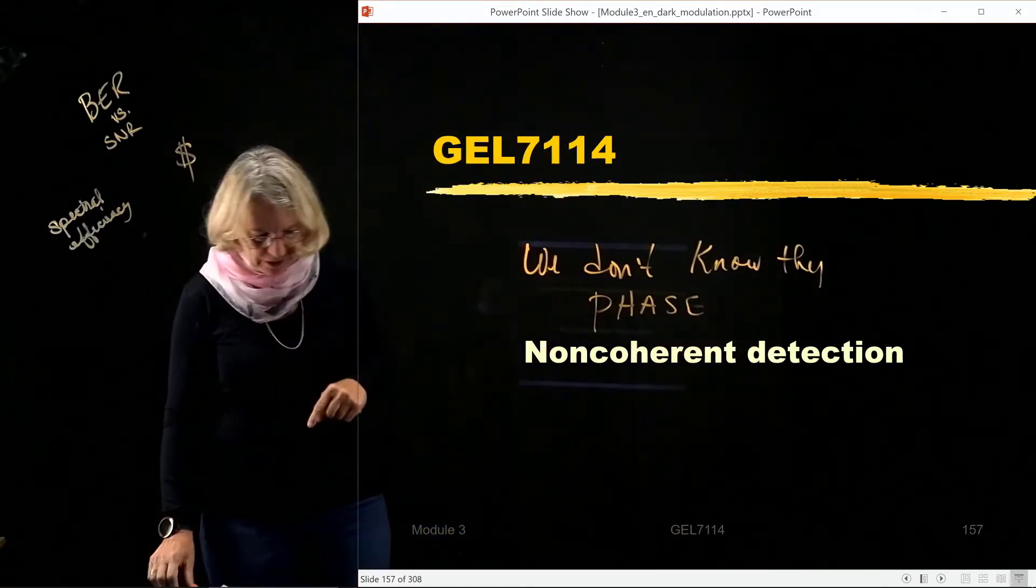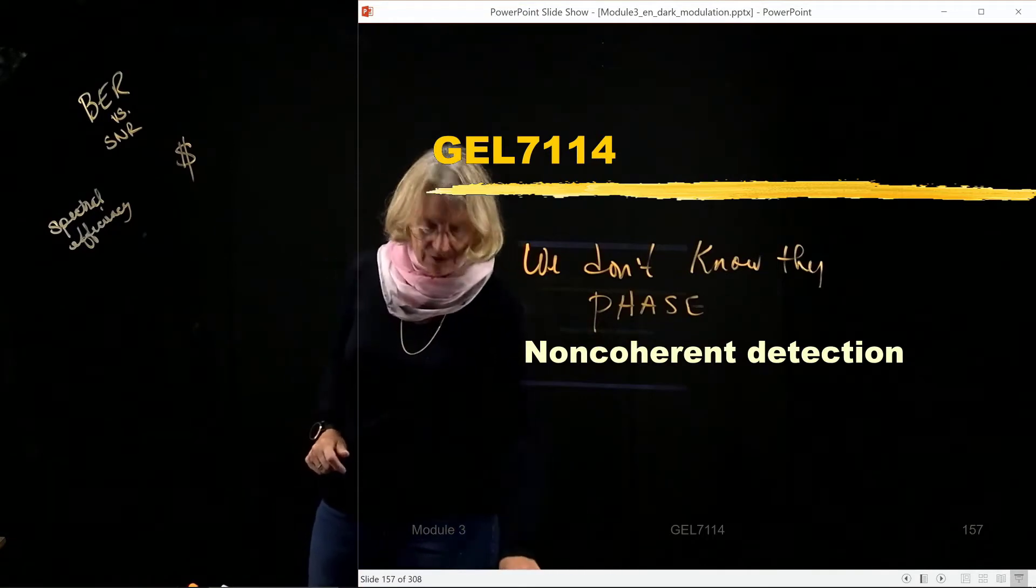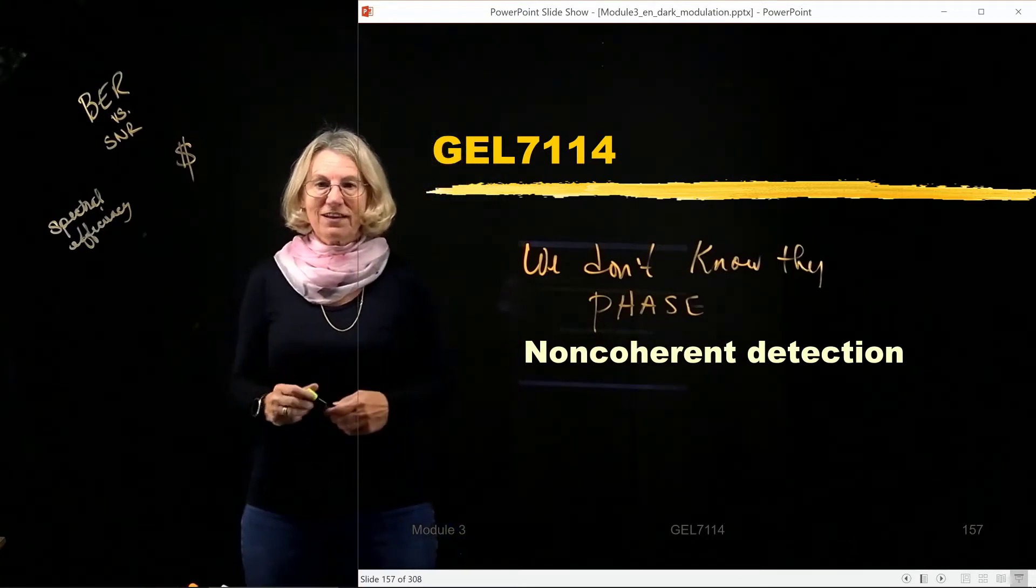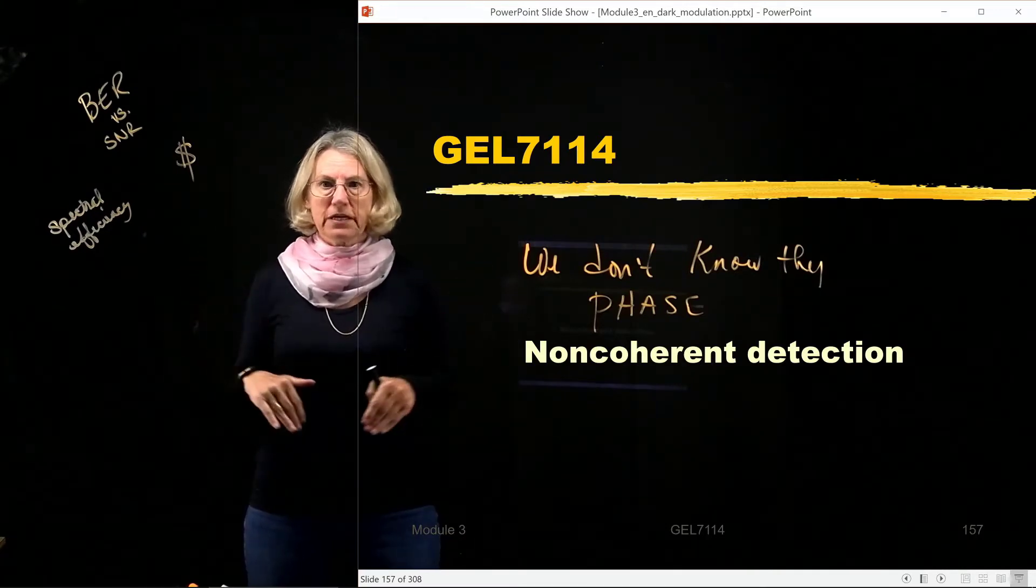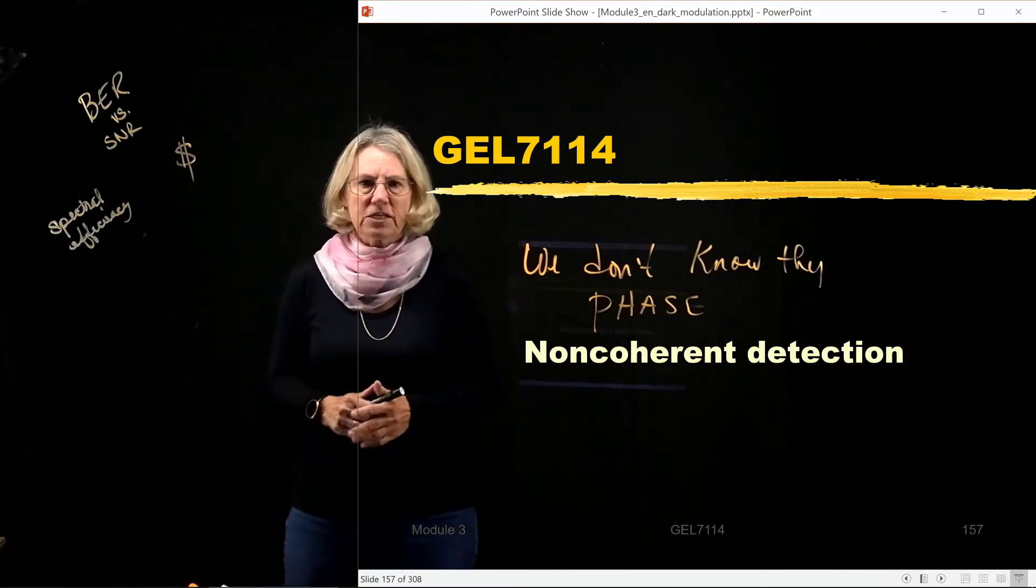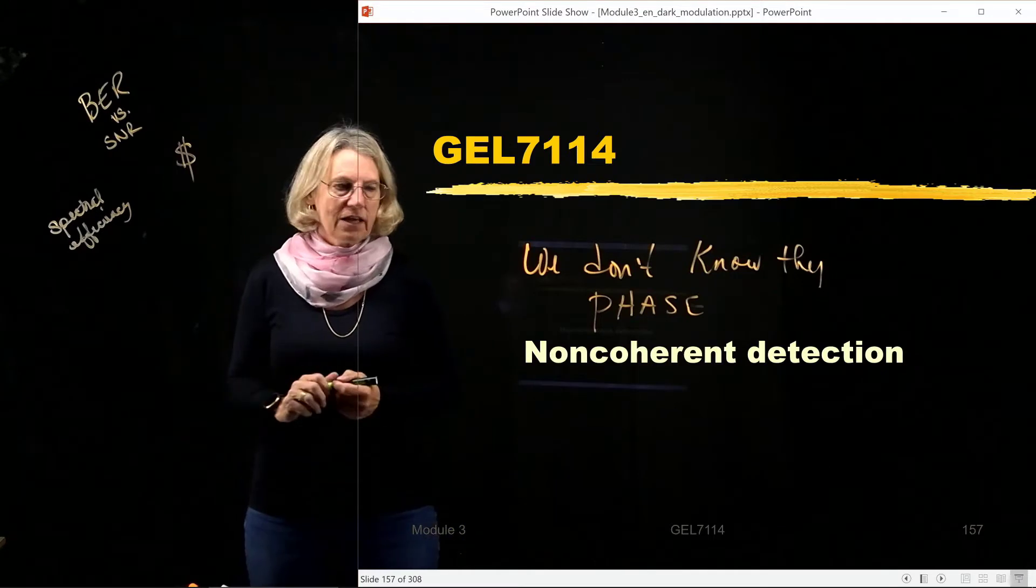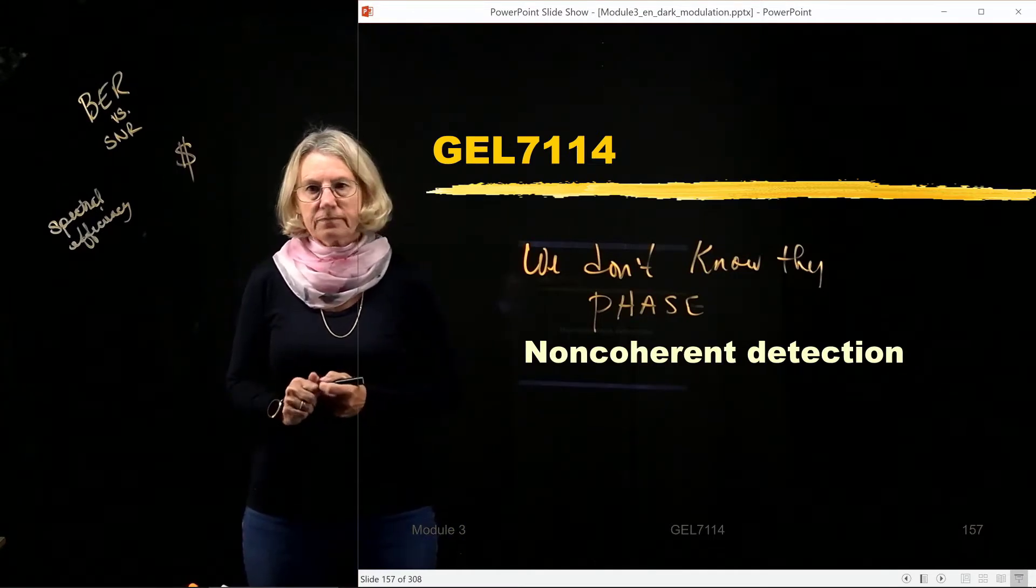So what does it mean by we don't know the phase? Well, you have to think back to what we do with coherent detection to understand what's going wrong and why we would need non-coherent detection. That's really what this video is going to be talking about, is why we need coherent detection. But first of all, what do I mean by the phase is known?